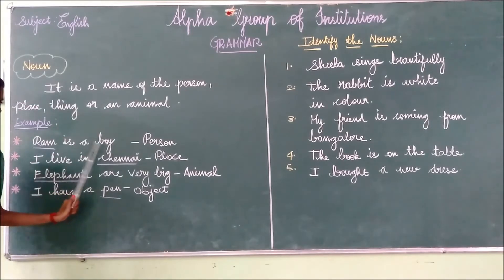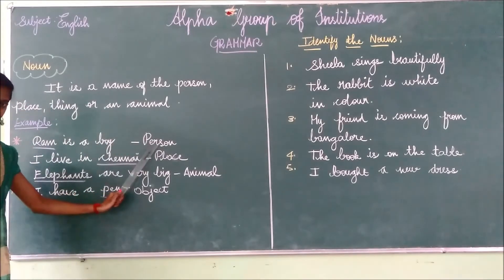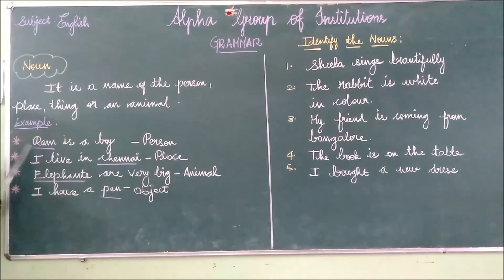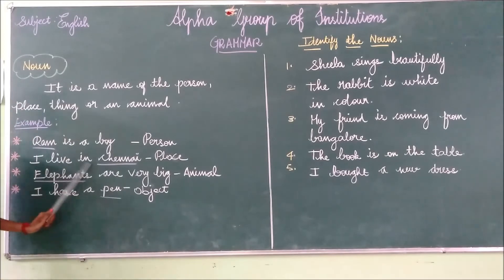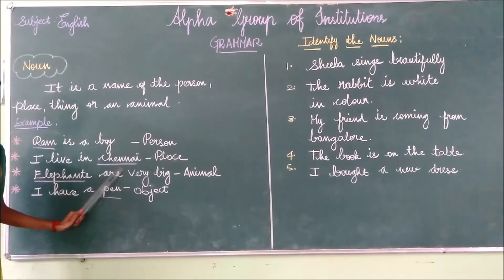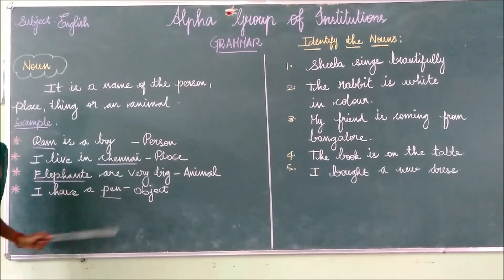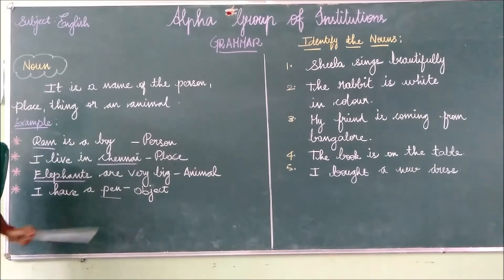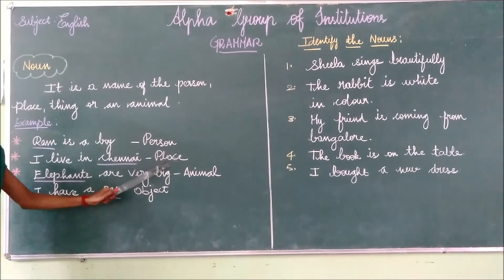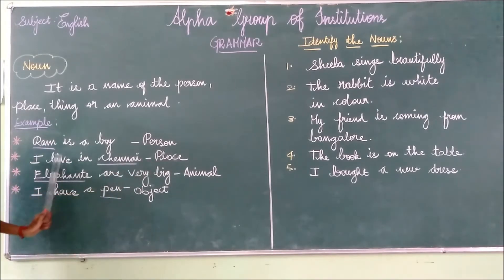Ram is a boy — it indicates the person, so in this sentence Ram is a noun. The second example: I live in Chennai. Chennai is a name of a place. So in this sentence, Chennai is the noun.